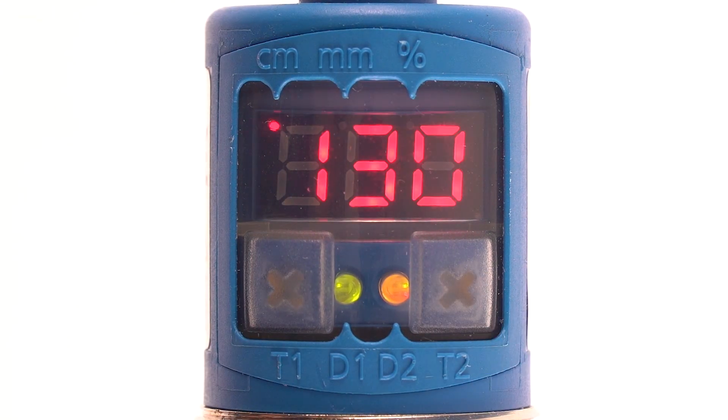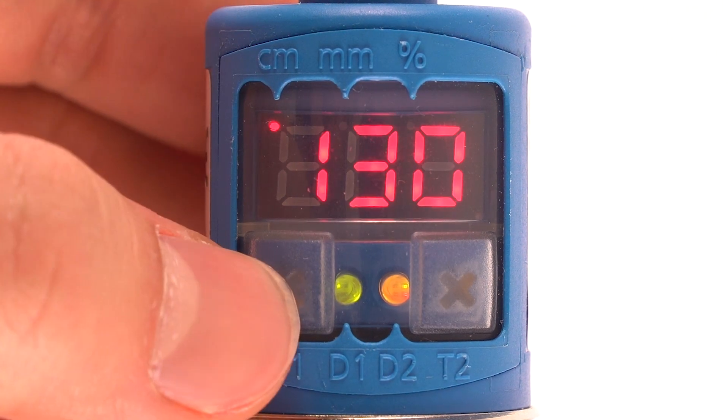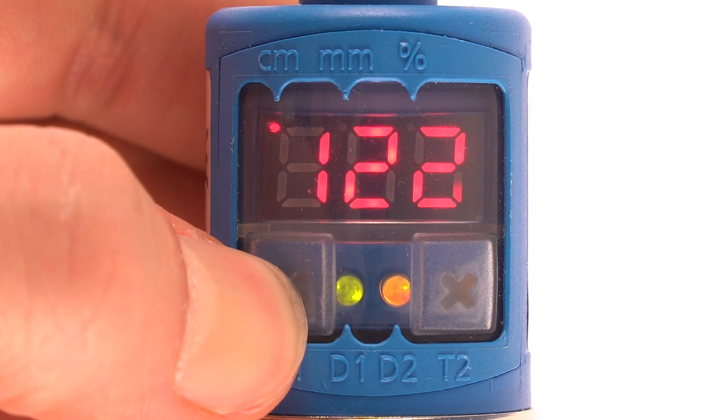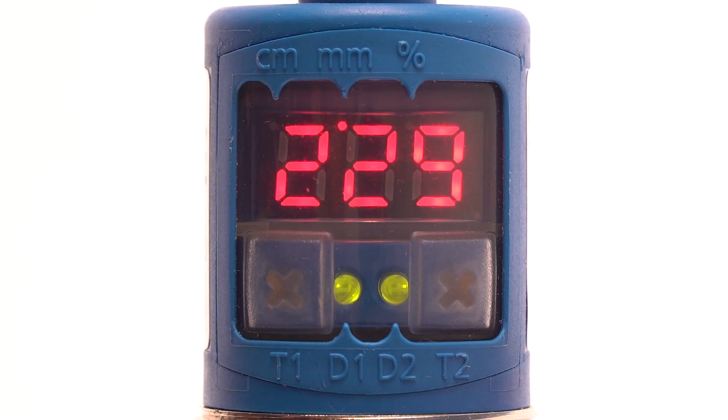Set the switching point in millimeters, centimeters, or percent. For down press T1 and for up press T2.